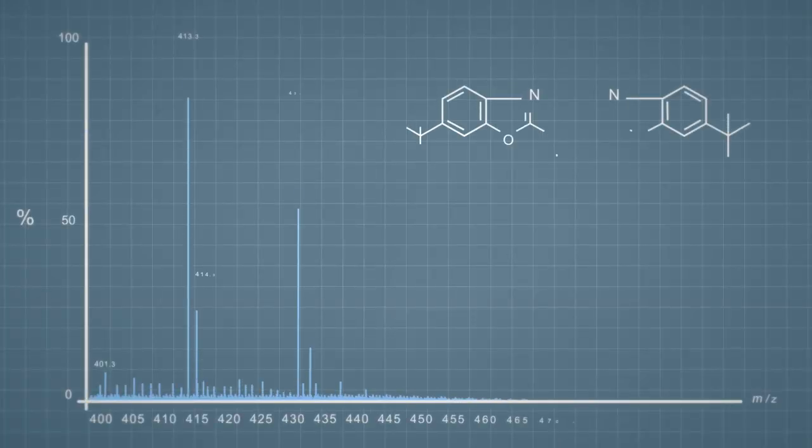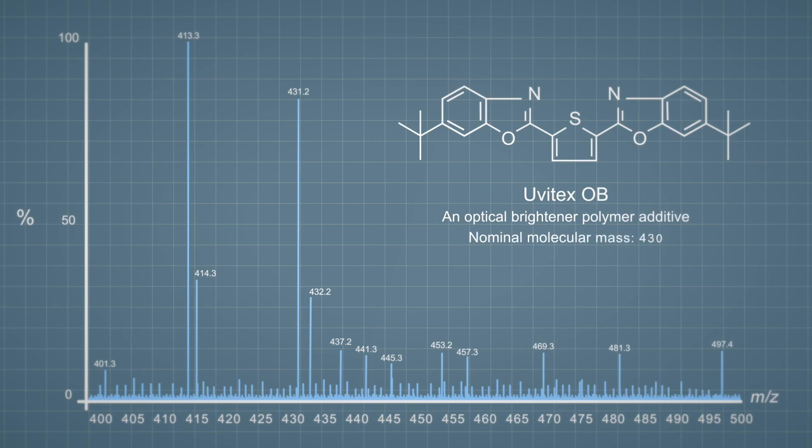This is a full scan mass spectrum of a sample containing a compound called Uvitex OB, which is an optical brightener polymer additive. This is added to polymers to make them appear a more bright white color. Uvitex OB predominantly forms proton adduct ions.